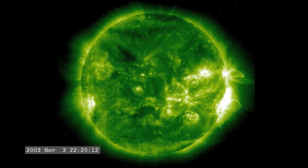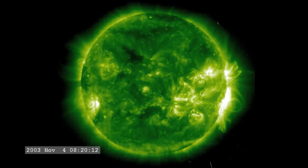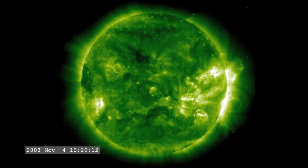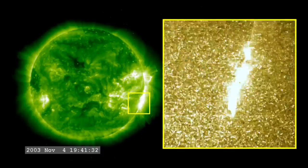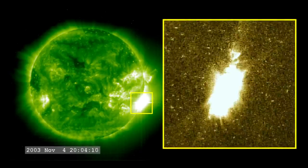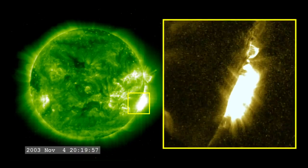The most powerful flare on record was in 2003, during the last solar maximum. It was so powerful that it overloaded the sensors measuring it. They cut out at X-17, and the flare was later estimated to be about X-45.